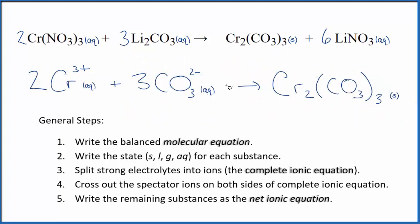This is the balanced net ionic equation for chromium 3 nitrate and lithium carbonate. You'll note that charge is balanced. We have 3 plus times 2, that's 6 plus. 2 minus times 3, that's 6 minus. So those all add up to zero. We have a net charge of zero, this is neutral, net charge of zero. Charge is balanced, and if you count the atoms up, they're balanced as well.